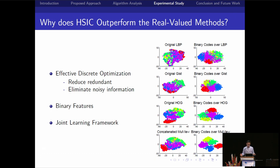Some of you may think, why is binary code better than real-value one? We give three reasons. The first one, effective discrete optimization. In fact, discrete optimization can reduce redundancy and eliminate some noise in the learned binary codes. On the right part, we can see that some similar structures in each cluster can be enhanced in the binary code. And some variance and dissimilarity can be eliminated as well.